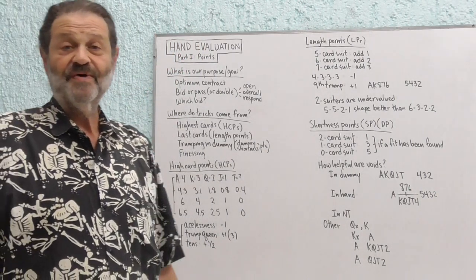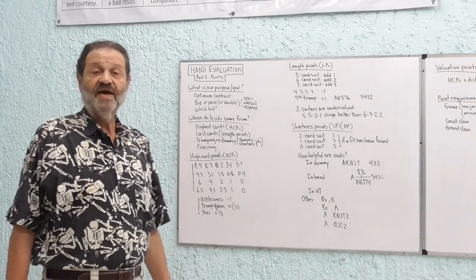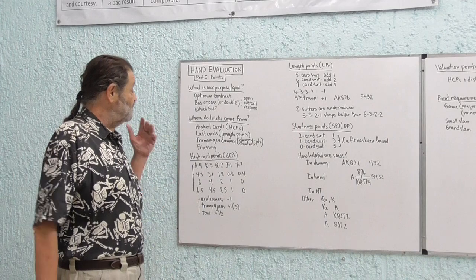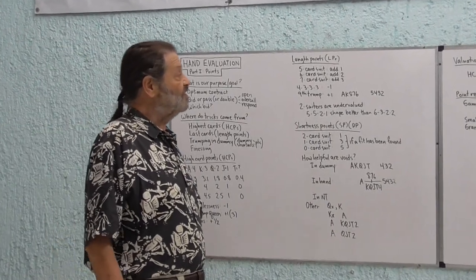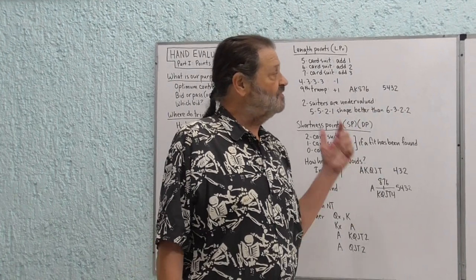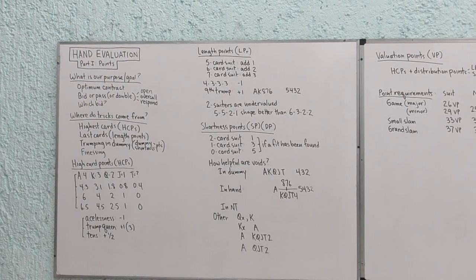Hi, this is Bridge with Stephen from the Lake Chapala Big Look at Bridge Club, and today we're going to begin the first of four parts on the topic of hand evaluation. We're going to be considering high card points, length points, and shortness points, and we're going to define valuation points and then look at the point requirements for various games and slams.